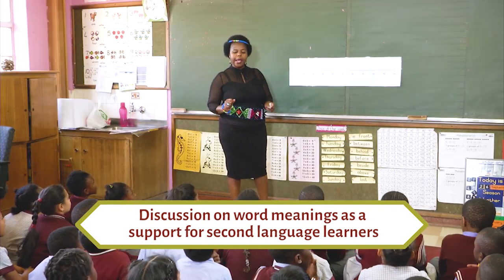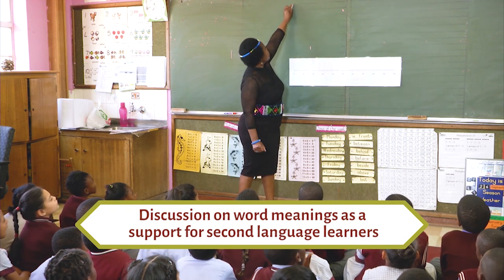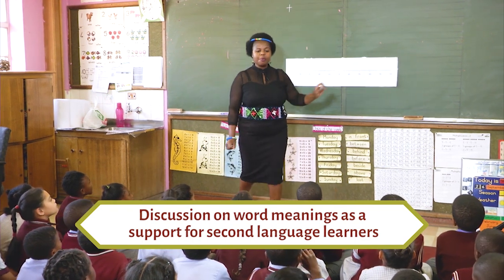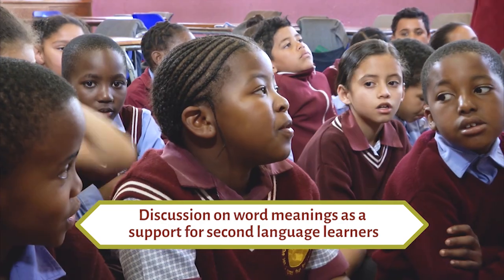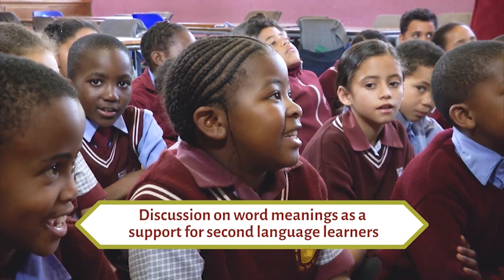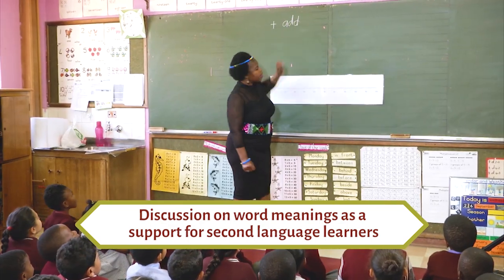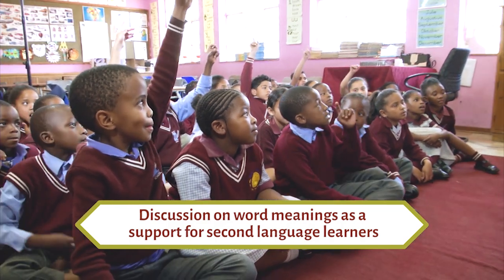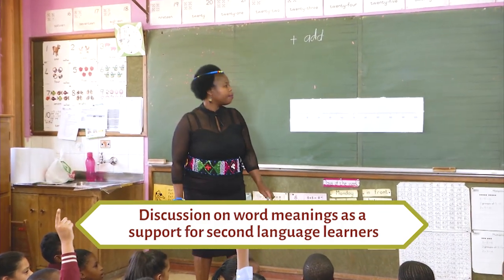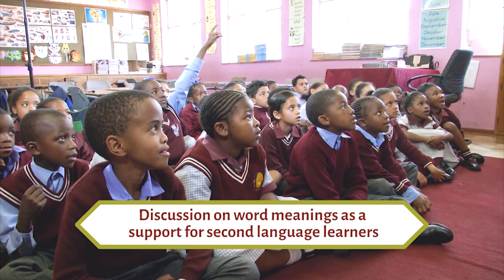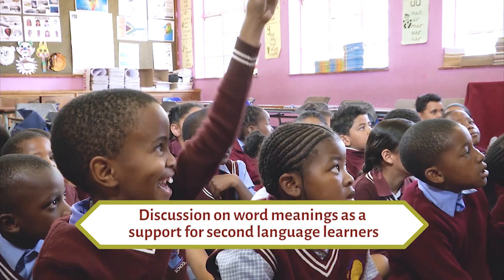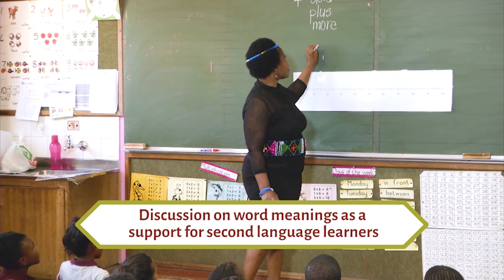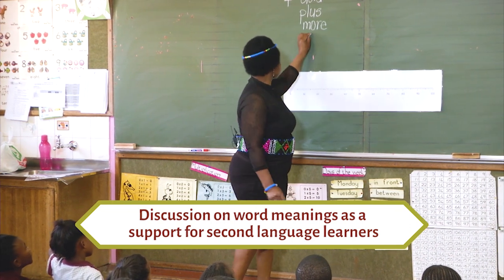Before we work on our number line, we are going to talk about this sign. Who can tell me what that sign means? — You must add. — Now if I don't want to say 'add,' what else, what language can I use? — Plus. — Yes, you can use 'plus.' And if I don't want to say 'plus'? — And. — Yes, 'and.' I can say '5 and 6,' meaning 5 plus 6.